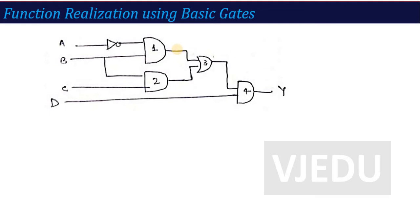Applying this: Gate 1 is an AND gate with inputs A̅ (because inverter is applied to A) and B, so the output is A̅B. Gate 2 is another AND gate with inputs B and C, so the output is B·C.